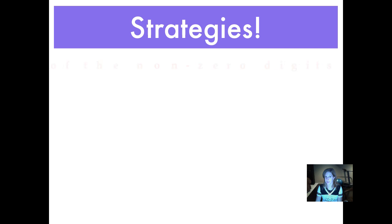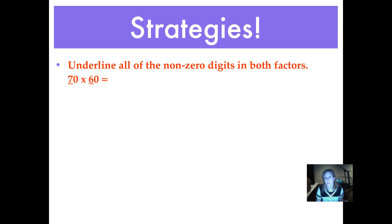Here are our strategies for using mental math. First of all, you underline all of the non-zero digits in both factors. So in the equation 70 times 60, you multiply the 7 and the 6 because they both have value. They're not zeros.